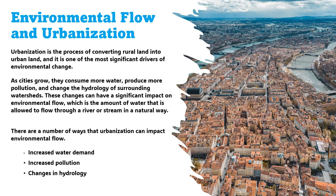The impacts of urbanization on environmental flow can be significant, with cascading effects on river ecosystems. For example, reduced environmental flow can lead to decreased fish populations and changes in the food web, making rivers less resilient to disturbances such as climate change or pollution. To mitigate these impacts, we can implement water conservation measures such as drought-tolerant crops for irrigation.